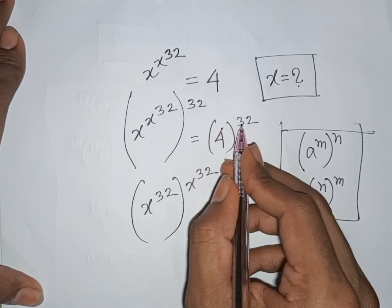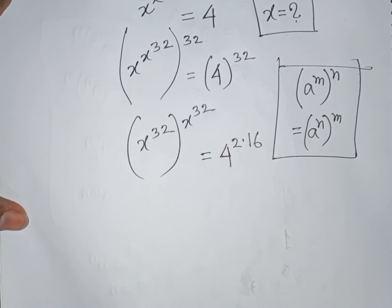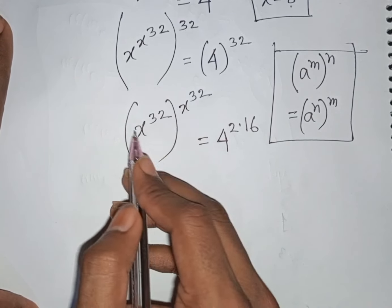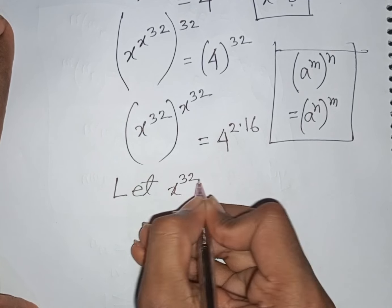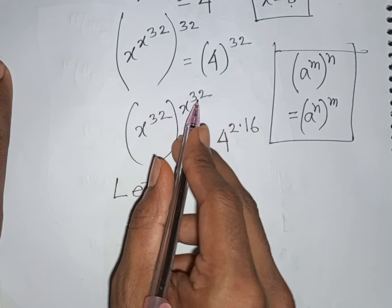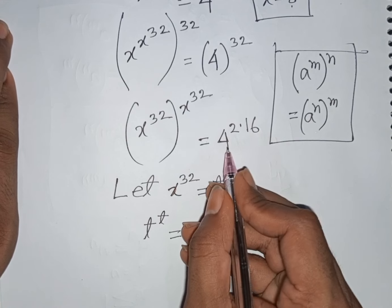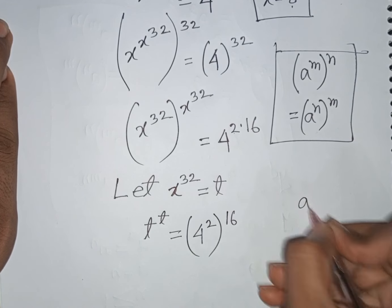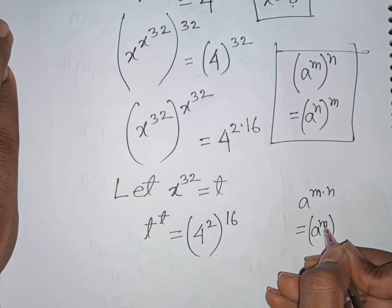4 power 32 can be written as 4 power 2 times 16. We see x power 32 appears twice with the same base and power. Let x power 32 be substituted by t. Our equation becomes t power t equals 4 power 2 bracket power 16. Since 4 power 2 equals 16, this gives t power t equals 16 power 16, applying the rule a power (m times n) equals (a power m) power n.